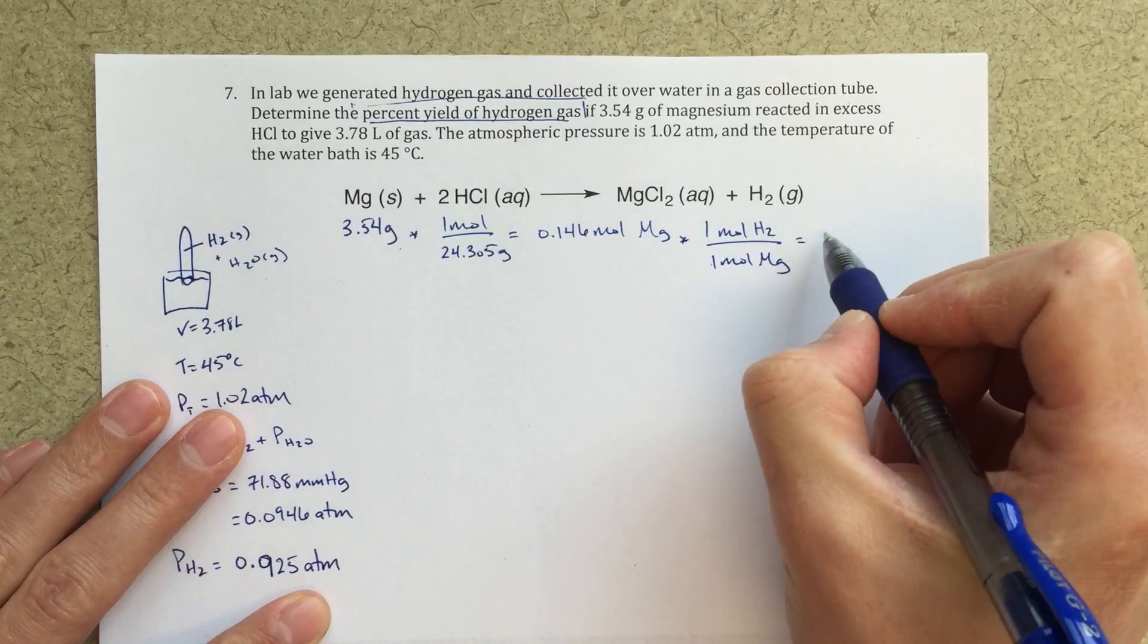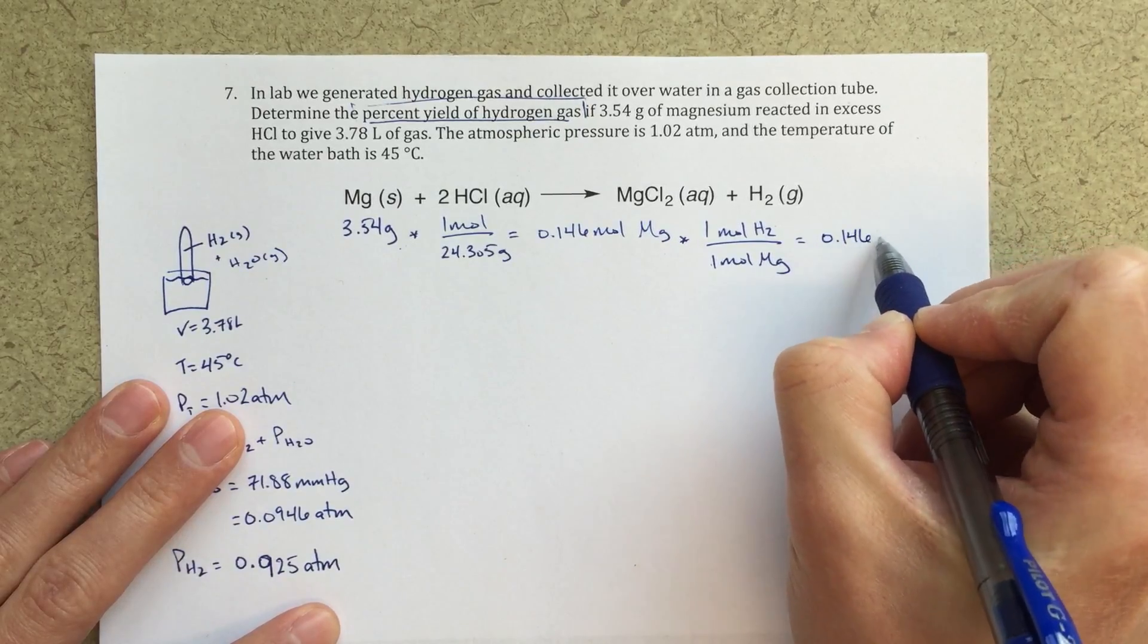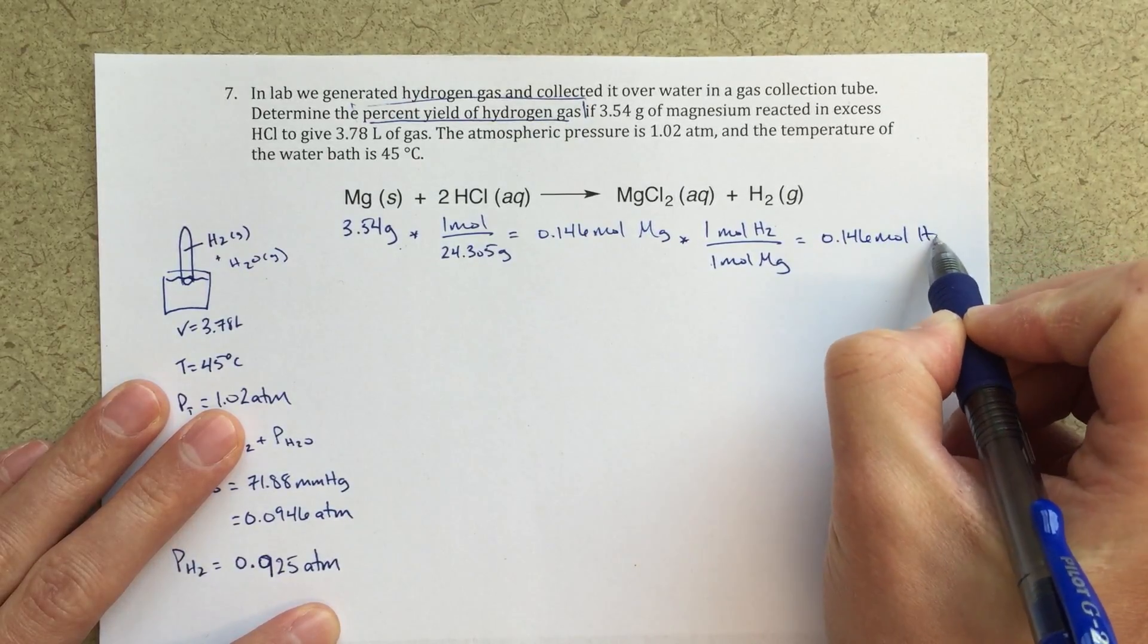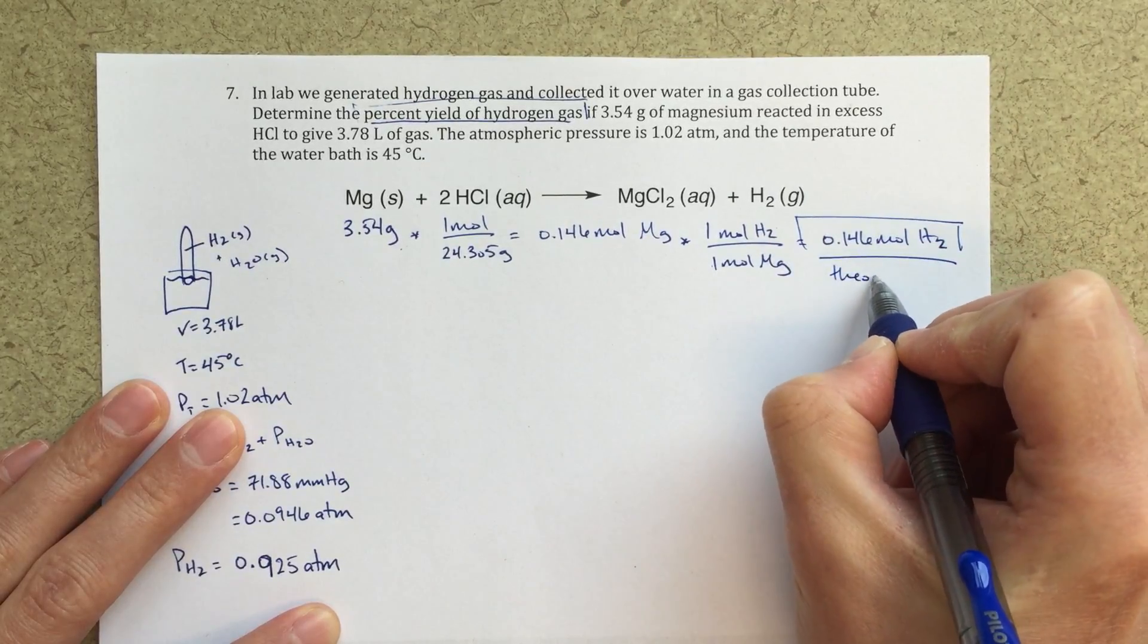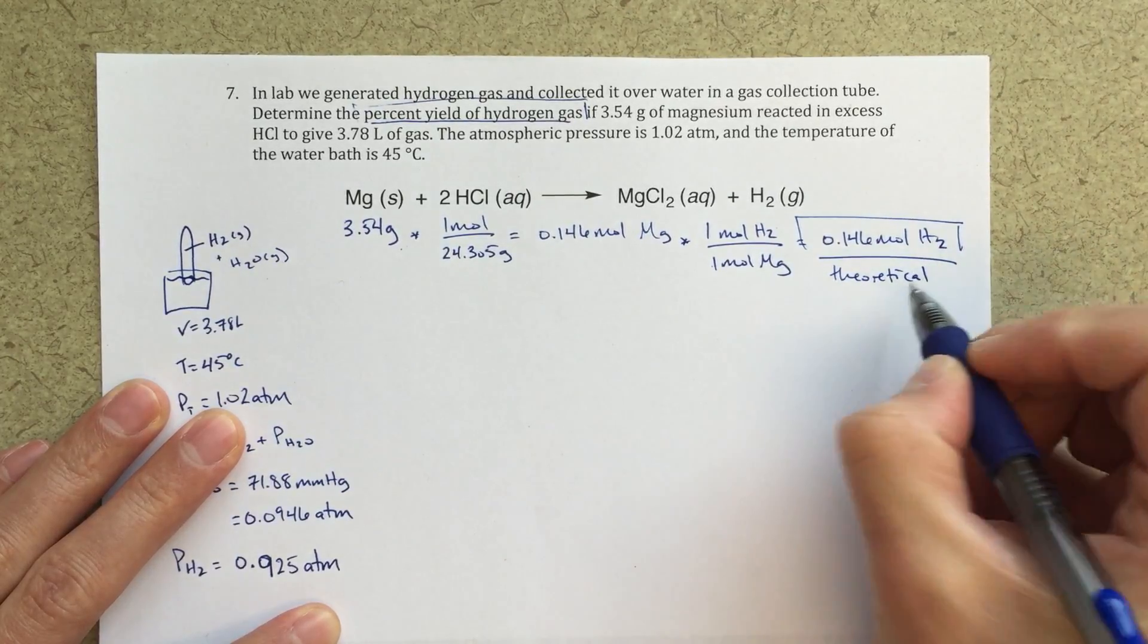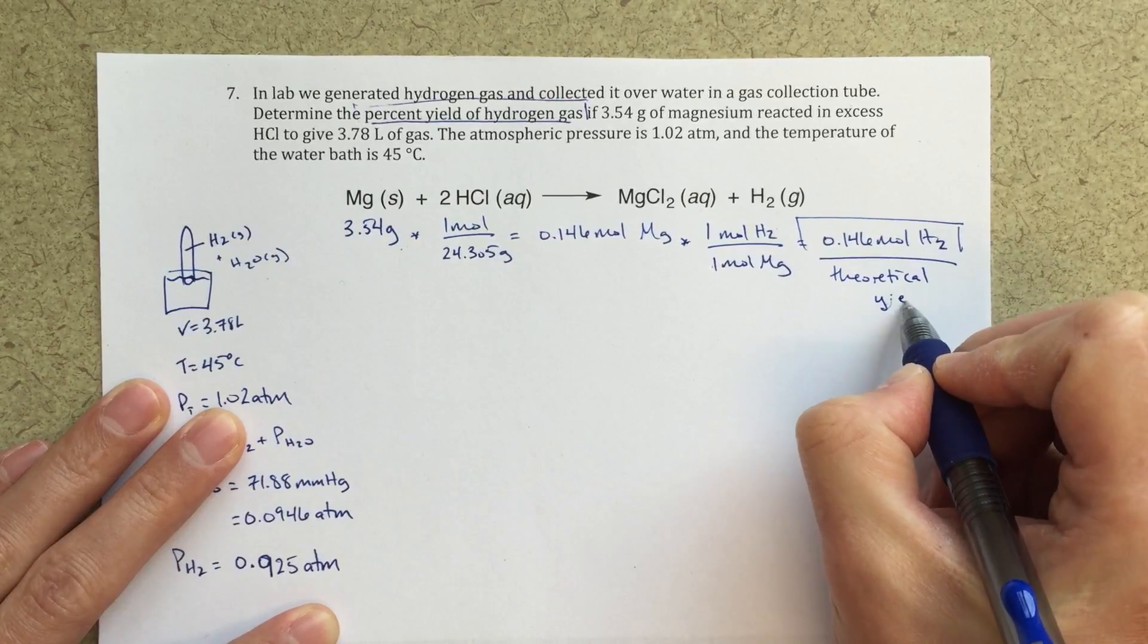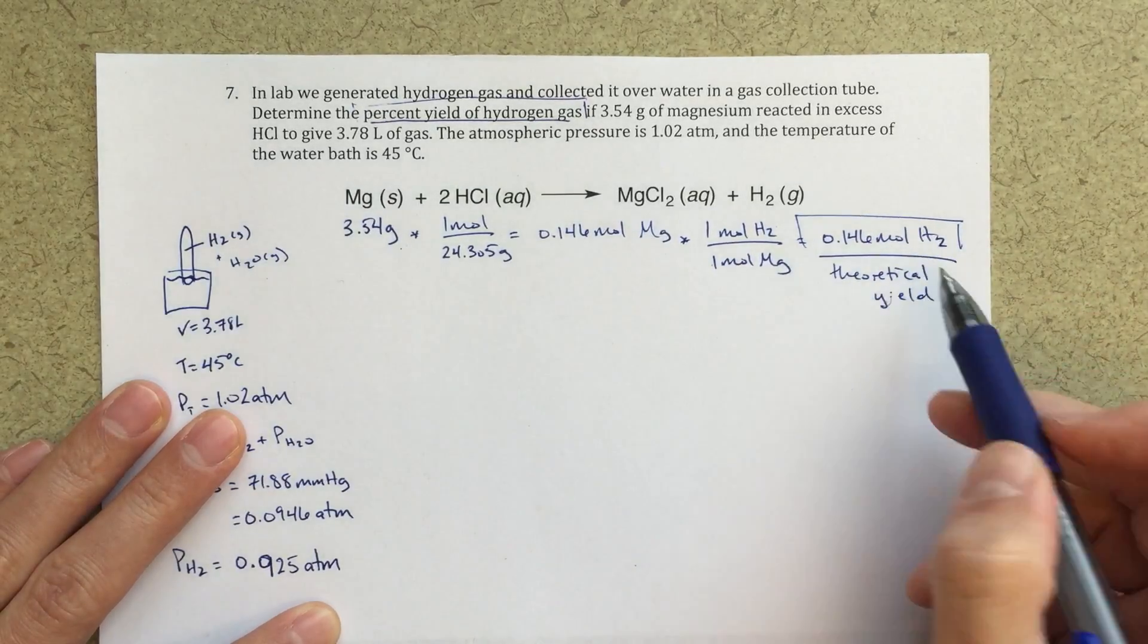So this is just our stoichiometry. Moles of magnesium will cancel, and I'll end up with 0.146 moles of hydrogen. This is my theoretical yield of H2 gas. Theoretical yield of hydrogen.